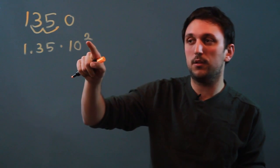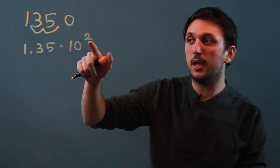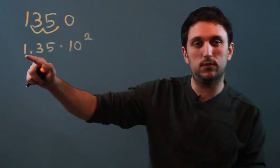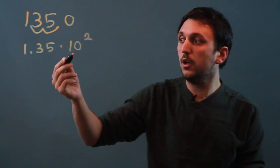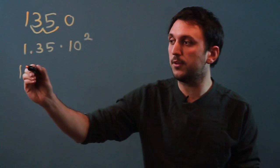And this exponent right here is what tells us how many places the decimal has been moved. So we could make it bigger. We could say 1350.